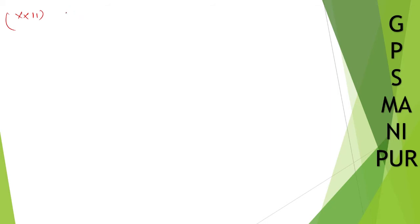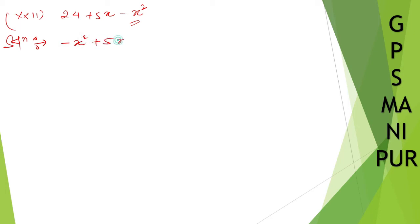Now let us do roman number 22. We have 24 plus 5x minus x squared. Now do not directly start calculating — look very carefully, you will see that x squared is at the last, it is in ascending order. You have to make it in descending order, so it will be minus x squared plus 5x plus 24. Arranging in descending order first.